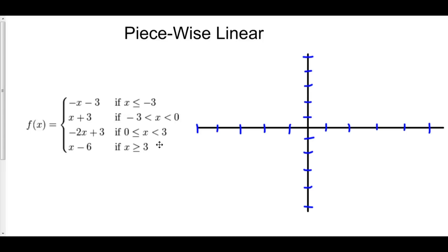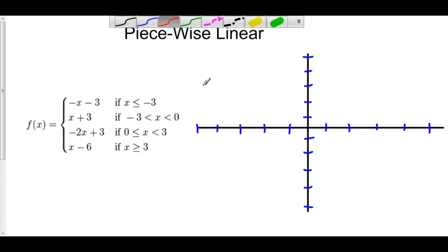Let's start farthest to the left and sew these functions together. We're going to start at negative 3. Everywhere from negative 3 and to the left, we're using the function negative x minus 3. We can plug in negative 3, which is our Frankenstein point, into this function. Negative negative 3 is positive 3, minus 3 is 0. So at negative 3, this function equals 0.